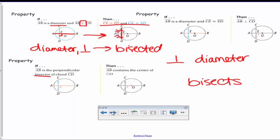So diameter, perpendicular, you can assume that chord is bisected and the arc is bisected. Looking at the next property, we start with something different. We have diameter listed, and now that this is bisected, so we have diameter, bisect, then we can assume that it's perpendicular. There's a 90 degree angle. So diameter, bisect, you can show perpendicular.